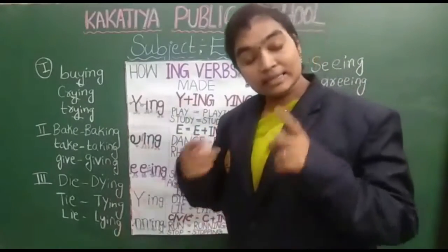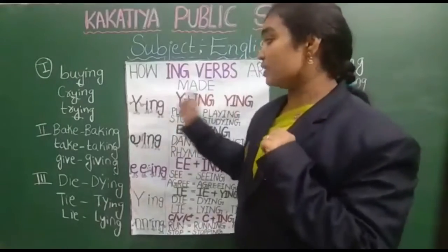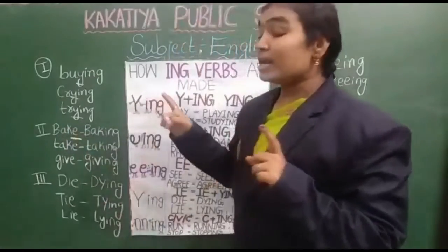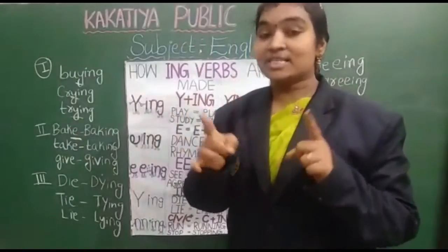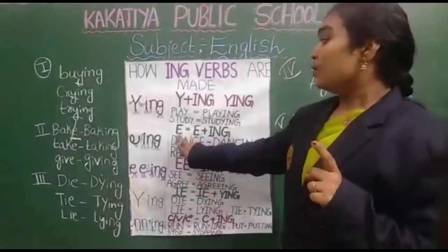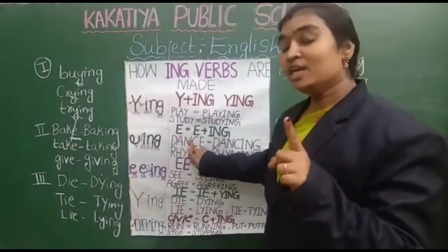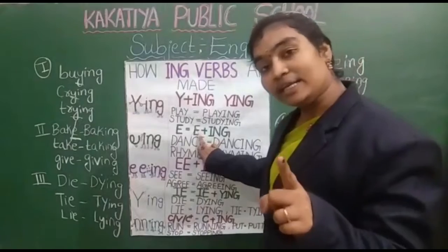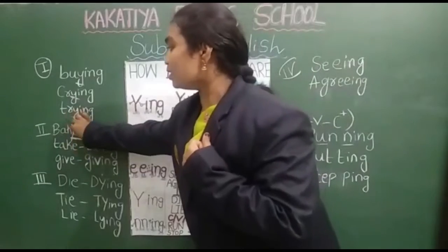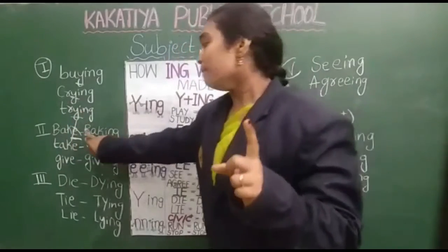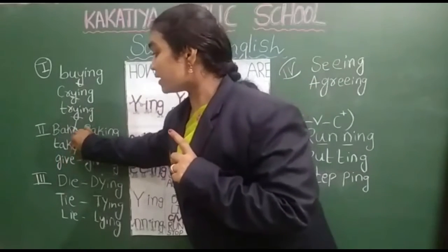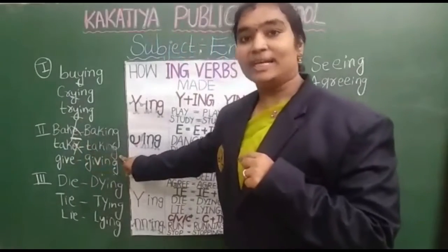Rule number 2: when the word ends with E — for example, B-A-K-E — E is there. Whenever the word ends with E, we are going to strike off the E and form I-N-G. Look here: B-A-K-E — we strike off E — B-A-K-I-N-G, baking. One more: T-A-K-E — we strike off E — T-A-K-I-N-G, taking.